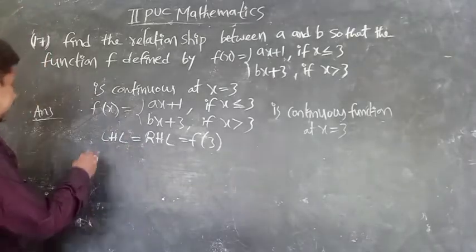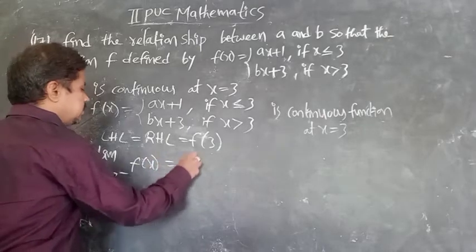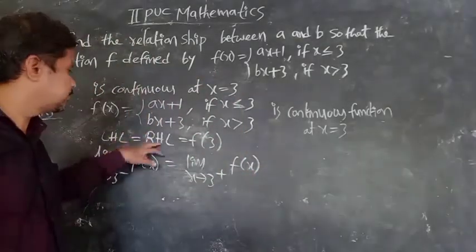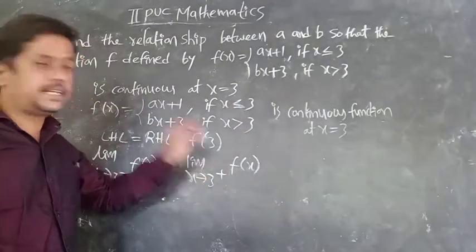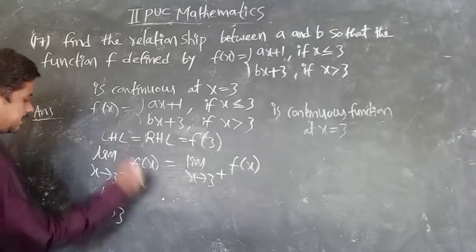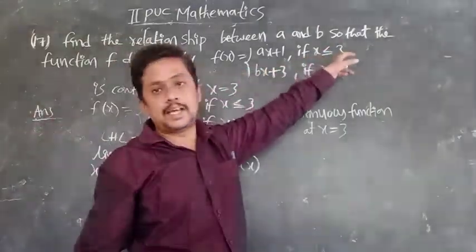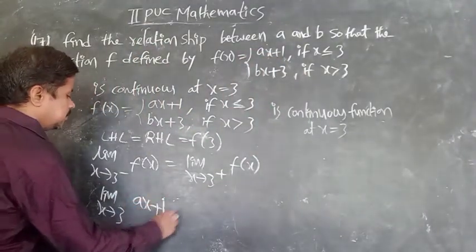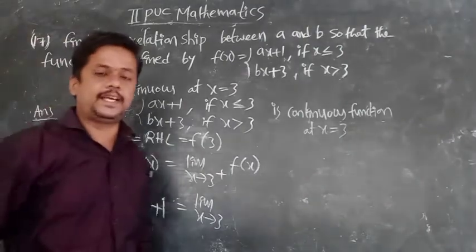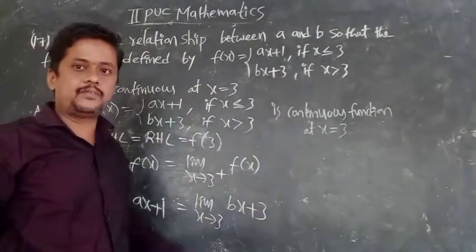LHL is limit as x tends to 3 minus of f(x), and RHL is limit as x tends to 3 plus of f(x), equals f(3). For 3 minus meaning x less than 3, I have to use the function ax + 1. For 3 plus meaning x greater than 3, I have to use bx + 3.